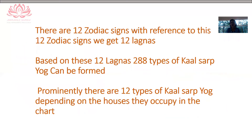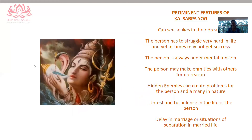There are 12 zodiac signs and with respect to 12 Lagnas, we get no less than 288 types of Kalsarp Yoga which can be formed. Prominently, however, we are going to discuss only 12 types of Kalsarp Yoga depending on the houses they occupy in the chart. Before moving on to the different kinds of Kalsarp Yoga, let us check out what are the prominent features of this yoga.